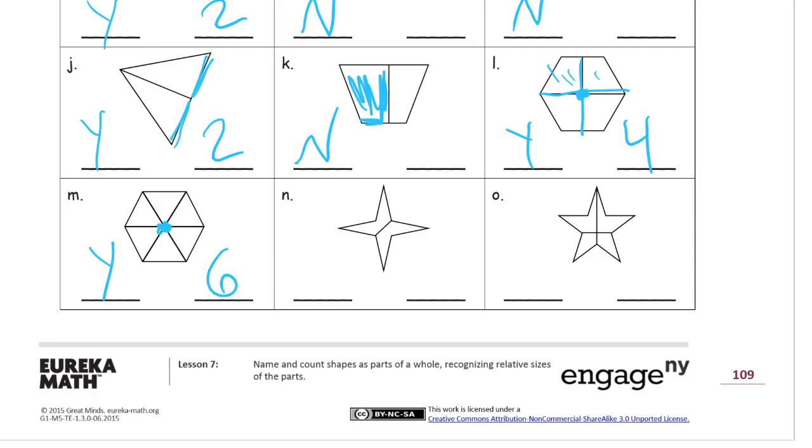And then now this star looks like there's a line of symmetry right here, and it looks like the two pieces look like they're the same on either side. So I'll say yes and that's two. And now this star has, it looks like it's gone corner to corner, but you can tell that this top half is way bigger than that bottom half. So these pieces are not equal.